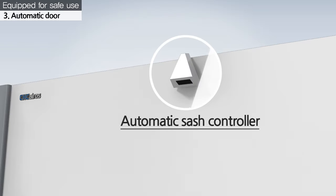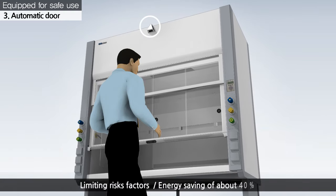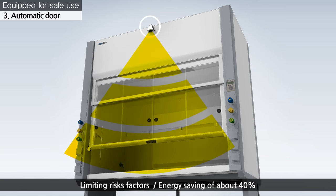A sensor on the door detects movement and automatically closes the door when there is no user in front. This automatic sash controller can save energy by about 40% and limits risk of explosion.